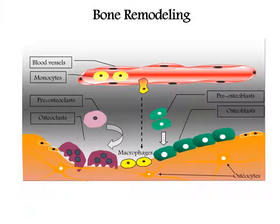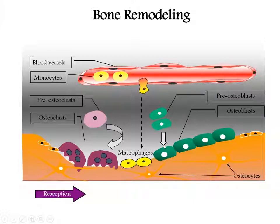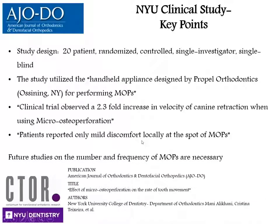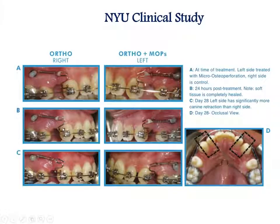There's a whole cascade of events with osteoclasts, osteoblasts, and differentiation that we can stimulate to our patients' advantage. The landmark study was done out of NYU, published in the AJO-DO in November 2011, and showed a very positive impact in the velocity of canine retraction when using manual osteoperforations.